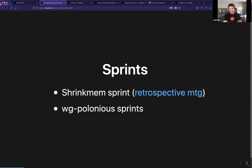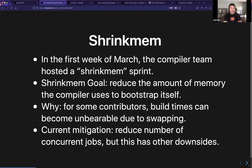There were two main categories of sprints. There was a compiler team sprint the first week of March — the shrink-mem sprint. We also did some Polonius sprints. For the shrink-mem sprint, the whole point was that the compiler uses a lot of memory when you bootstrap it, which is terrible — in particular for some contributors, their machines just die or build times become completely unworkable because of the overhead of memory swapping in virtual memory.